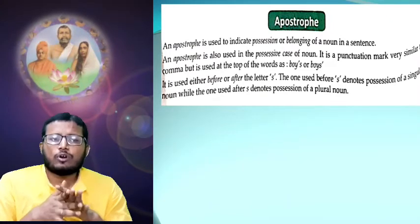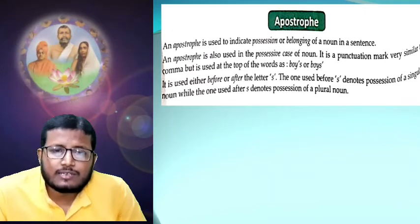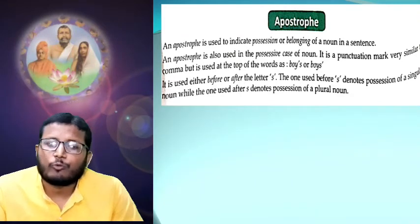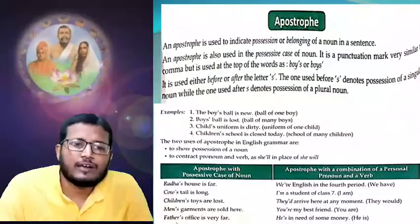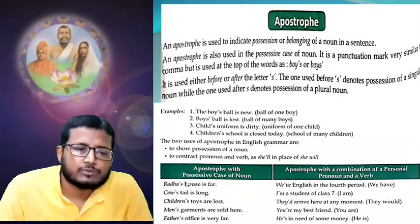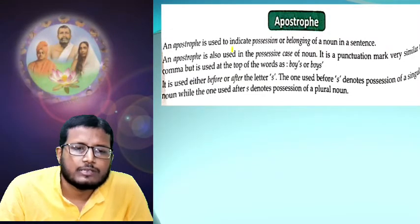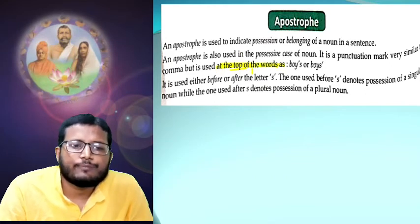It is a punctuation mark very similar to a comma, but it is used at the top of words. So the apostrophe is placed at the top of the word. Let me take my pen. For example, I will show you — 'the boy's' where the comma is at the top, and 'the boys'' also.